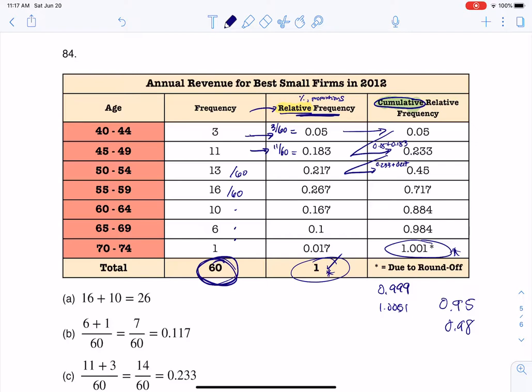Part A of this said, what was the frequency for the CEO ages between 54 and 65? And I said there was a typo on that. Your book should have said 55 to 64. One of the buzzwords in part A was the fact that they wanted a frequency. So if they wanted a frequency, then I want to total those two numbers together. And that's where I'm coming from that one.